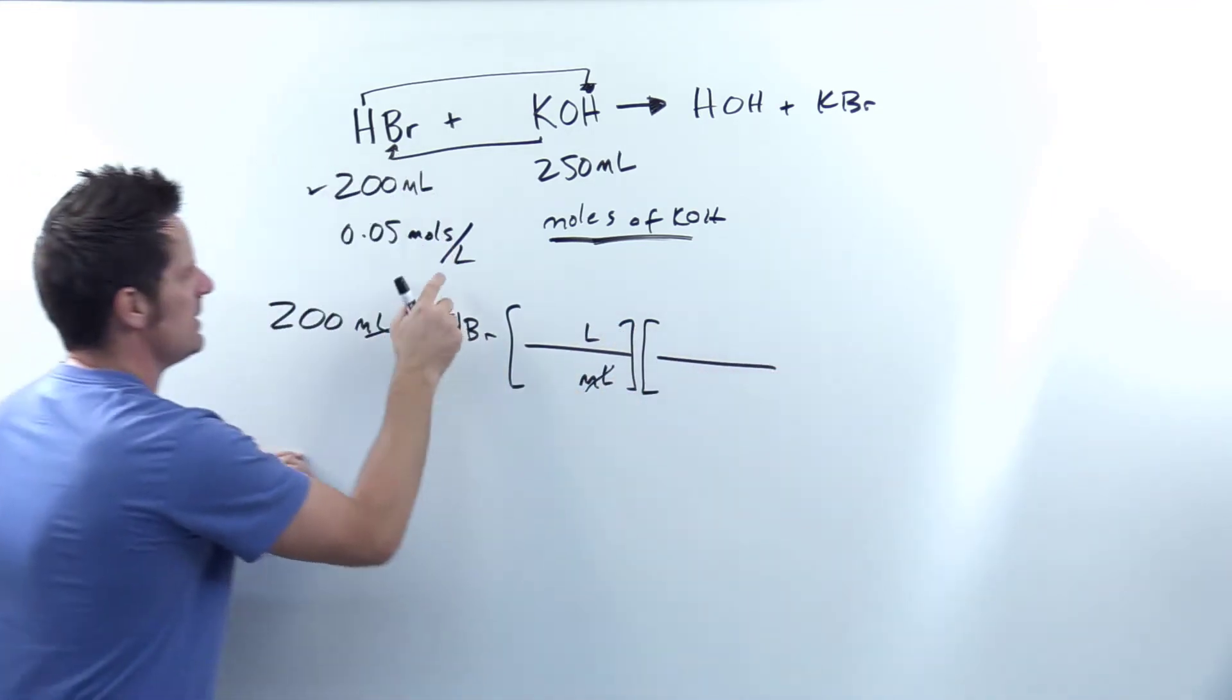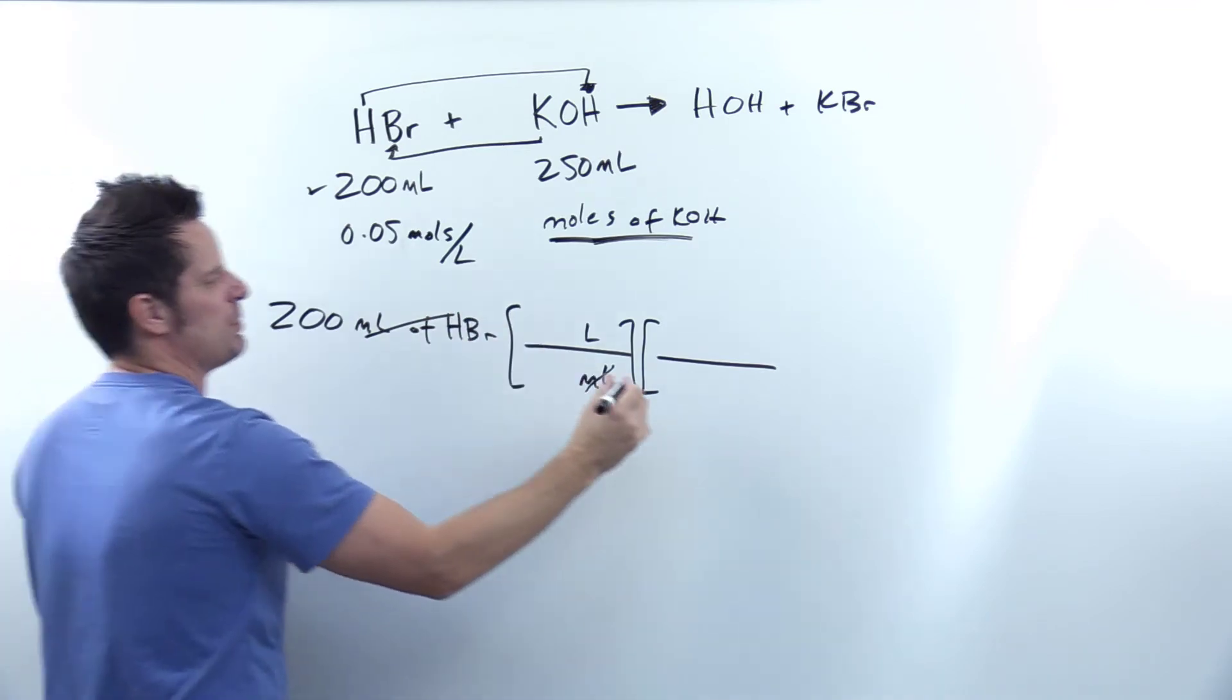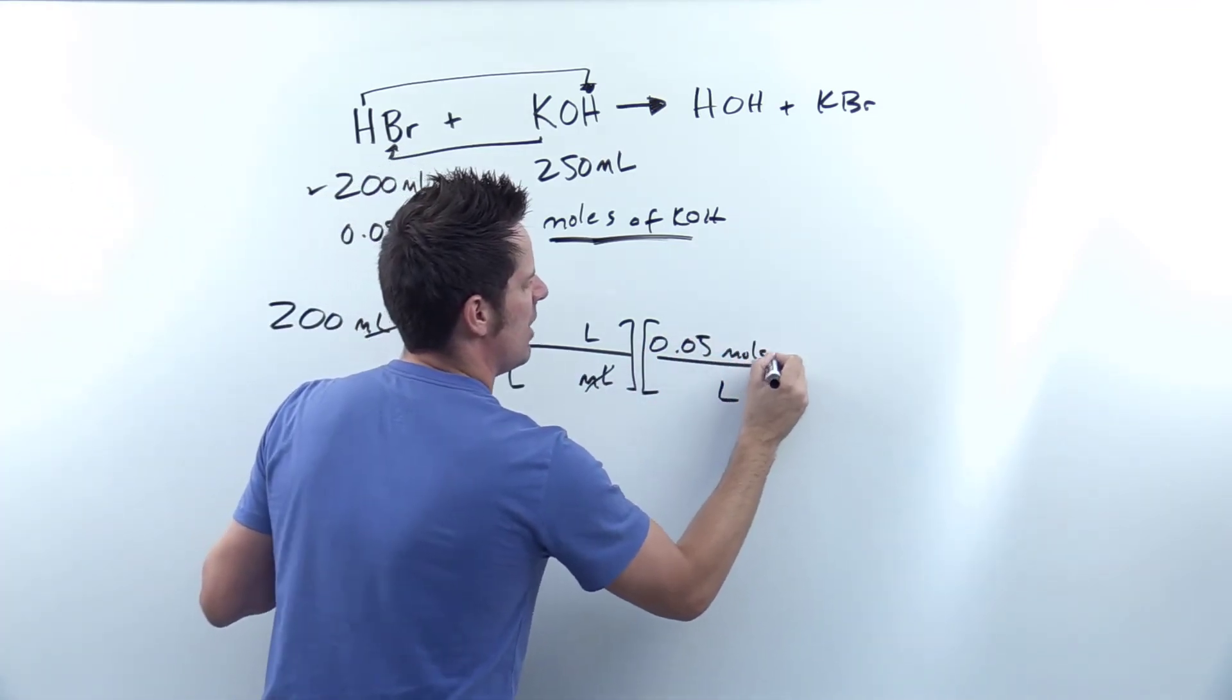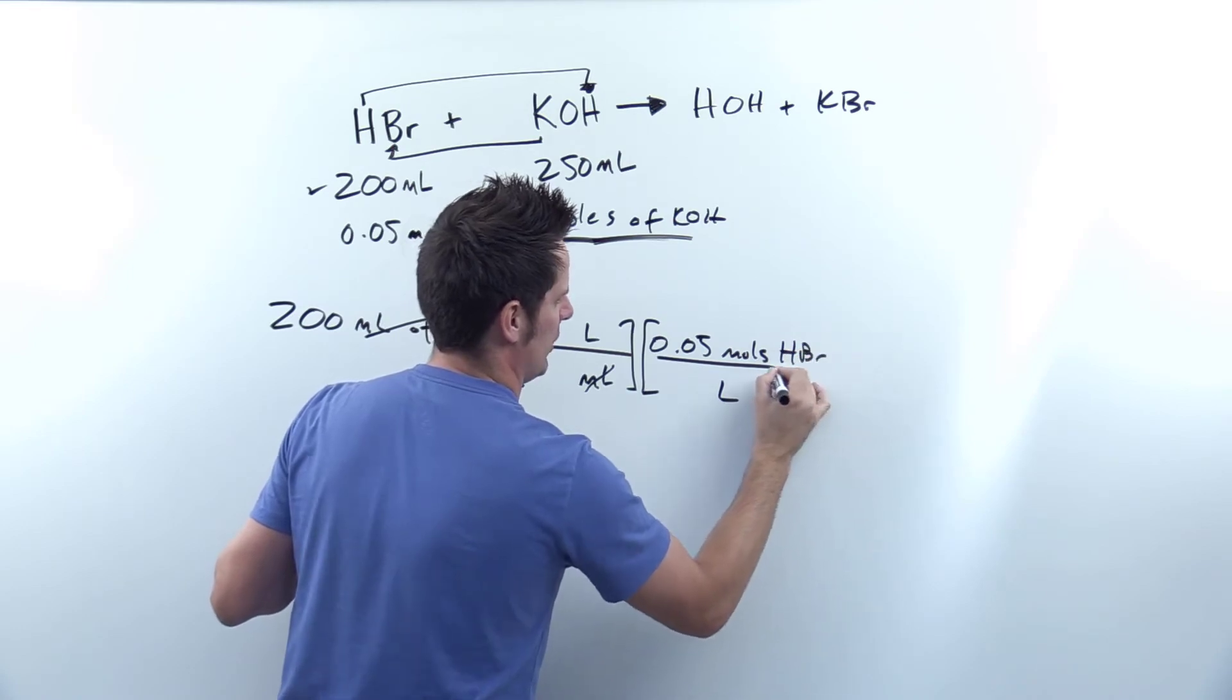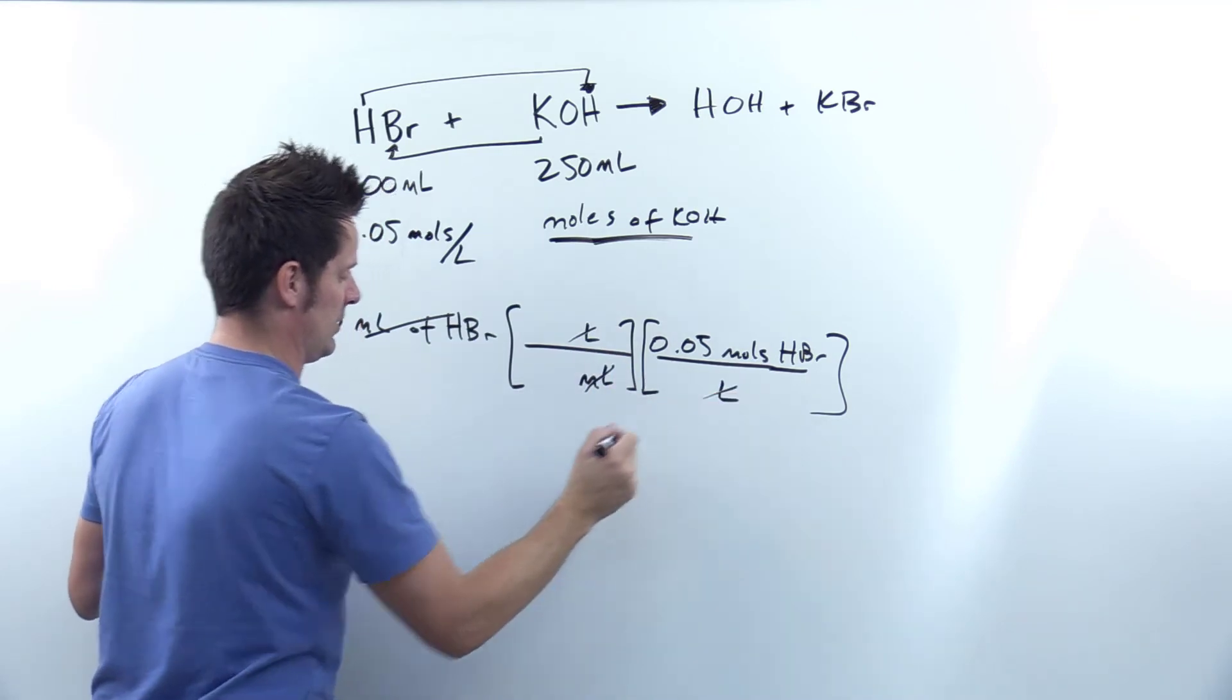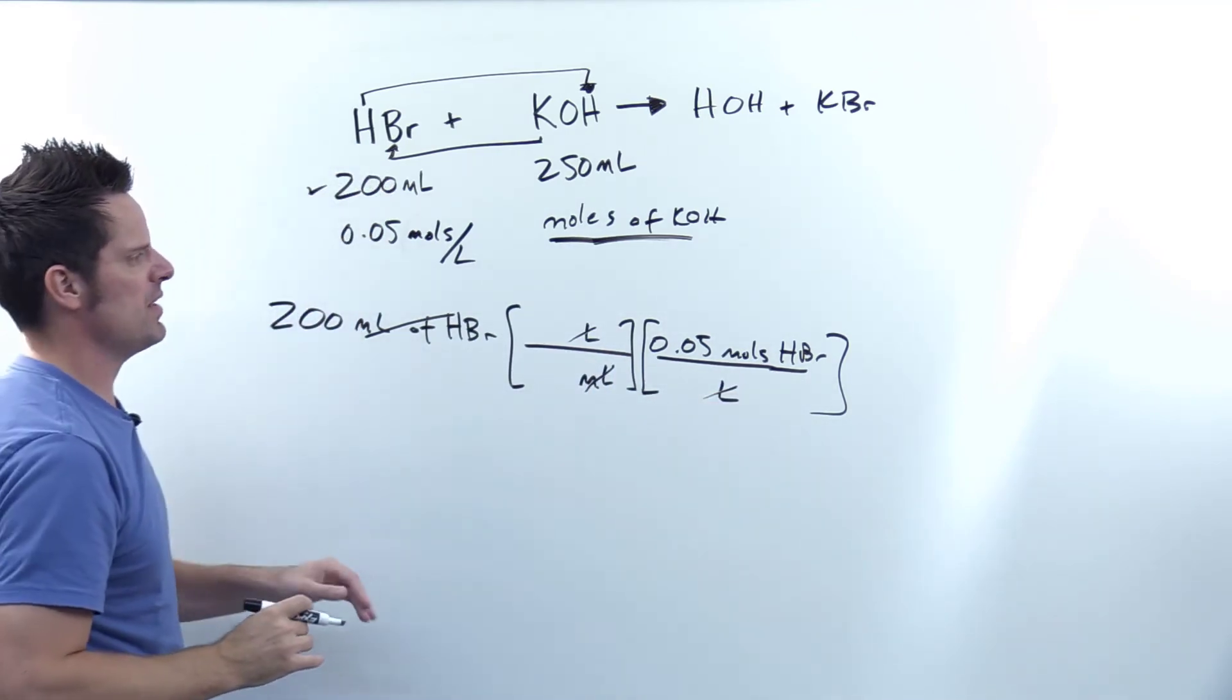Now, units in the denominator of the next term, yeah, they're going to be liters, and I'm going to pull it from the HBr. So I've got 0.05 moles of HBr per liter. That's what this molarity number represented. My liters cancel each other out.